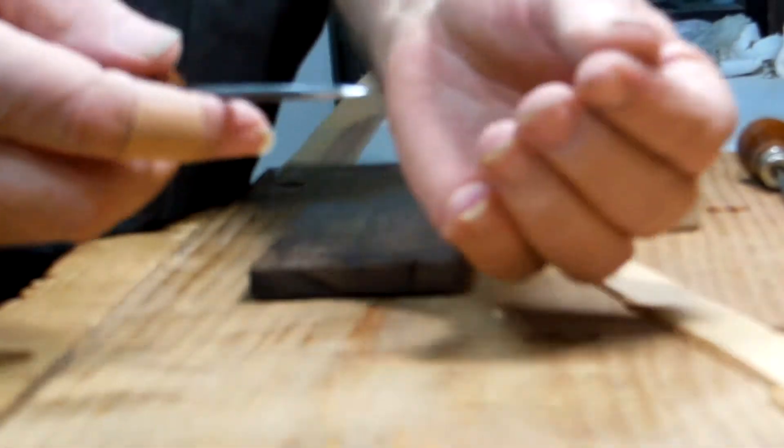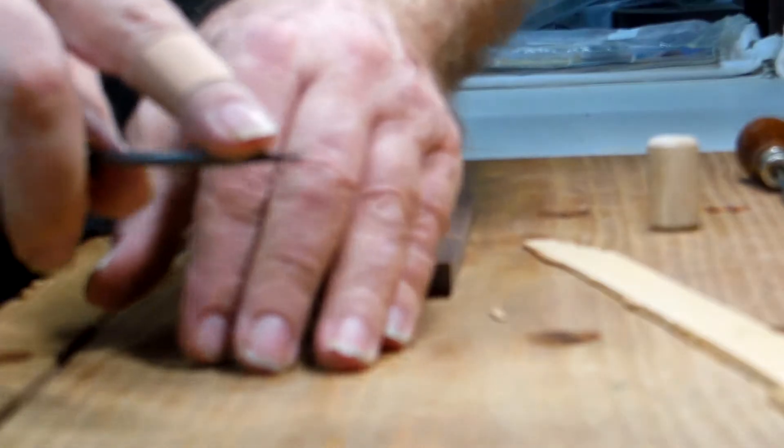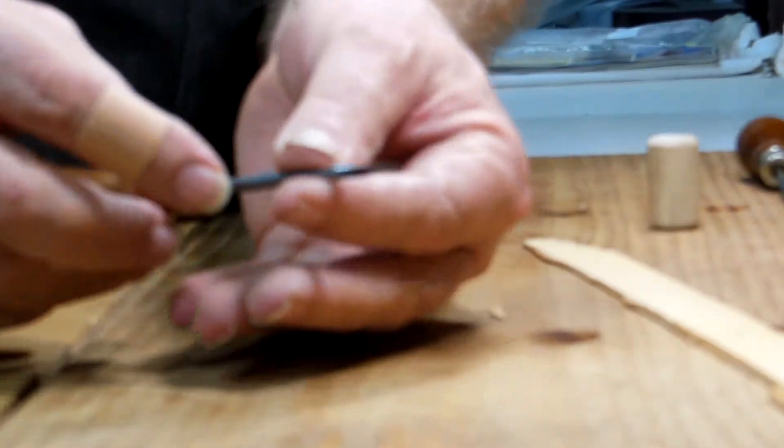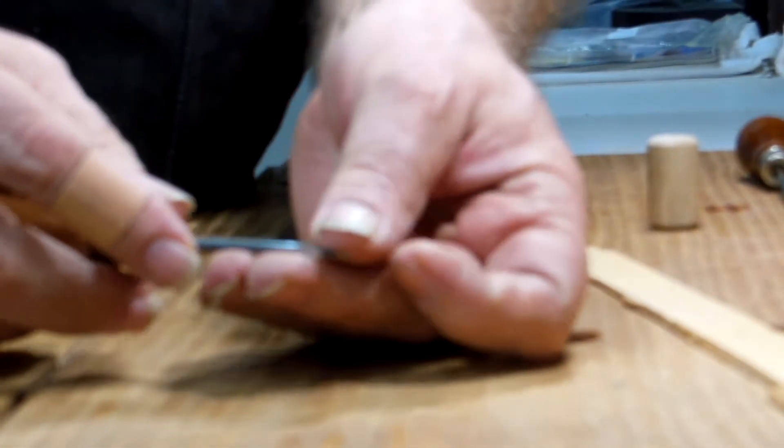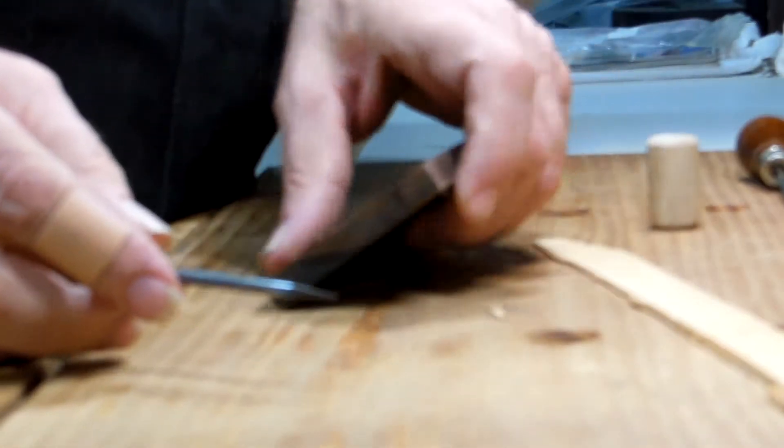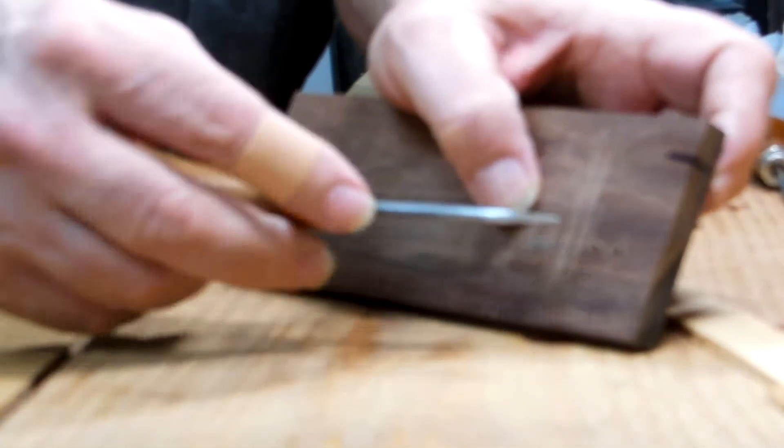And then you hone them on your stones or sandpaper. You can do it like scary sharp, whatever, so that it's nicely polished and the edges are sharp. It's these sharp edges that actually allow you to cut the holes.